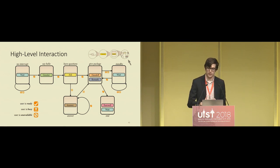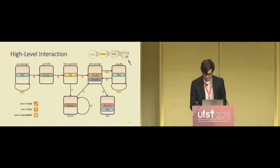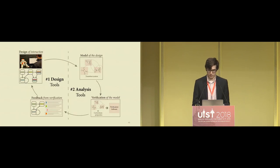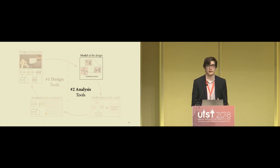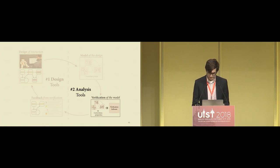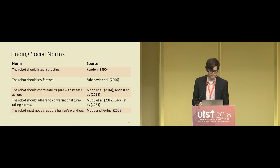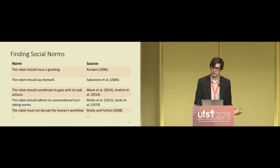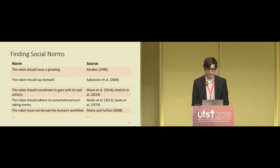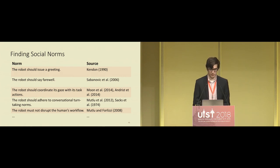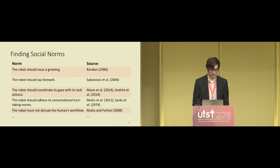People can use the inputs and outputs of micro-interactions to compose them sequentially and concurrently within Rover's design interface. When you break all of this down, the high-level interaction is actually a complex network of low-level states and transitions. Now, the first step of verification is to find the social norms you want to verify. Social norms can come from anywhere — the literature, data, or manual specifications by designers. For us, social norms came from the literature, and there are many more we could encode within Rover.